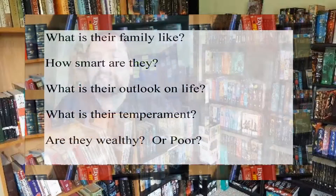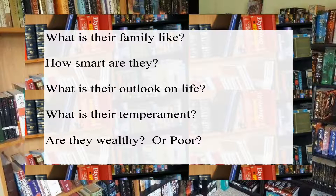So now we have a type and a vague appearance — it's still not a character though. We need to flesh them out a bit. Write the answers to the following questions down on your piece of paper: What is their family like? How smart is the character? What is their outlook on life? What is their temperament? Are they wealthy, or are they poor?